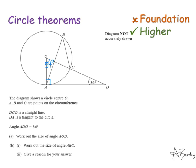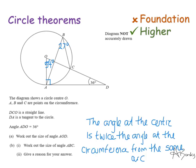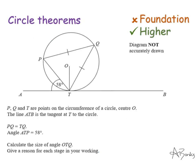The next part asks for the size of angle ABC. AC is my arc; I have an angle at the centre and an angle at the circumference from that very same arc, so the angle at the circumference is half the angle at the centre. The size of angle ABC is 27 degrees. The reason: the angle at the centre is twice the angle at the circumference from the same arc.